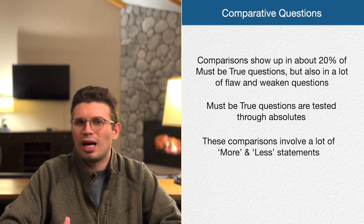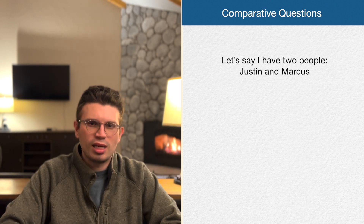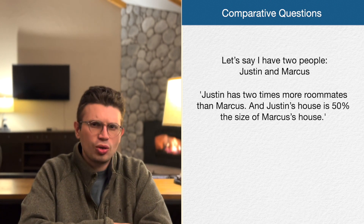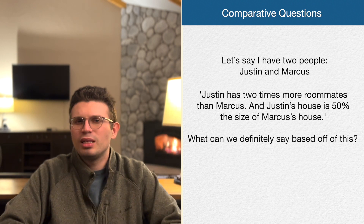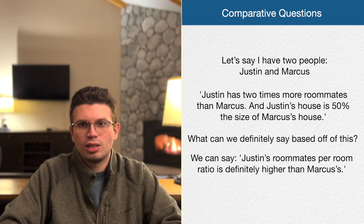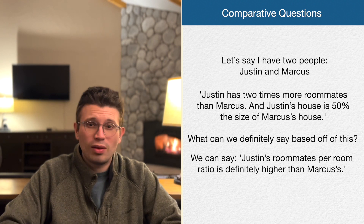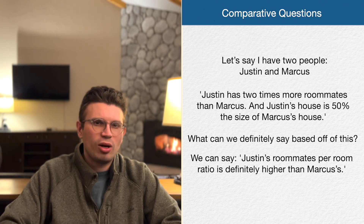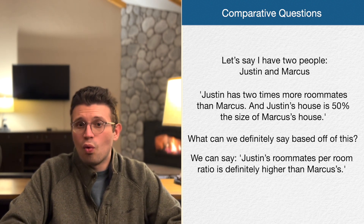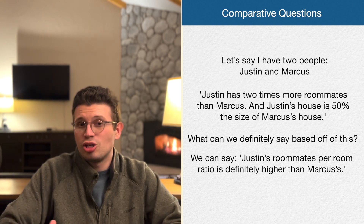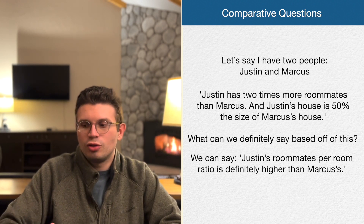These comparisons involve a lot of 'more and less' statements. For example, say Justin has two times more roommates than Marcus, and Justin's house is 50% the size of Marcus's house — we can definitely say Justin's roommate-per-room ratio is higher than Marcus's. Usually in comparisons you have two different things compared: either two things at the same point in time, as with Justin and Marcus, or one thing compared at two different points in time, like Justin today versus Justin five years ago. Both are essentially doing the same thing.